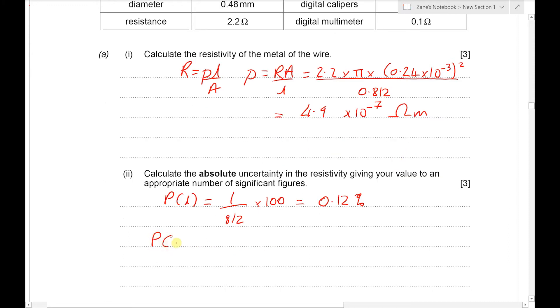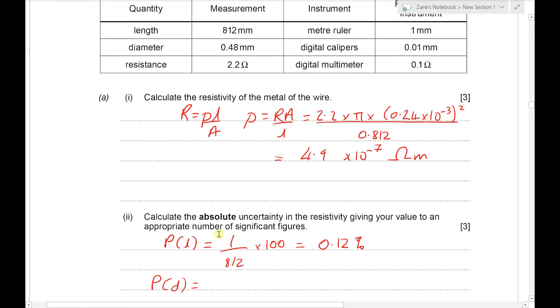Next we're going to work out the percentage uncertainty in the diameter in exactly the same way. We've got 0.01 out of 0.48 times by 100.